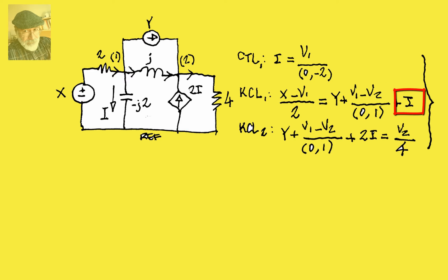Those are the currents leaving that node, and KCL for node 2 are all the currents arriving there, which are all of these three, which I can copy and paste over here. 1, 2, 3, plus another i, 2i. That is equal to the current leaving the node, v2 over 4.